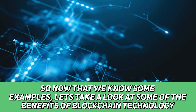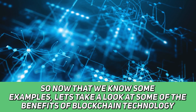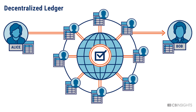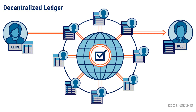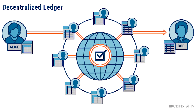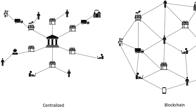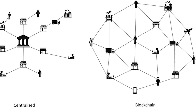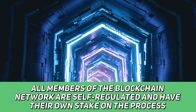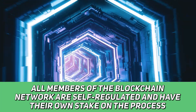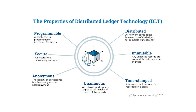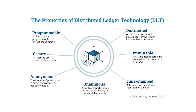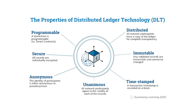Now that we know of some examples, let's take a look at some of the benefits of using blockchain technology. One of the biggest benefits is that blockchain technology is entirely decentralized, meaning there is not a centralized entity that confirms operations on the blockchain. All members of the network are self-regulated and have their own stake in the process. Blockchain technology also ensures security of data, achieved through algorithms and the proof of work concept.